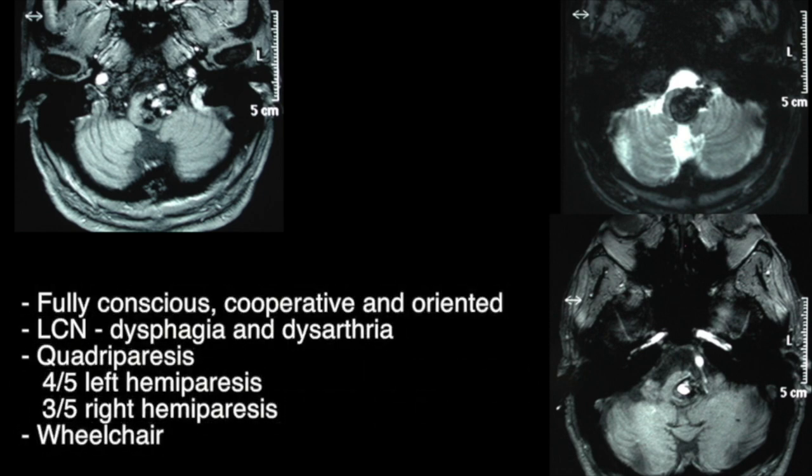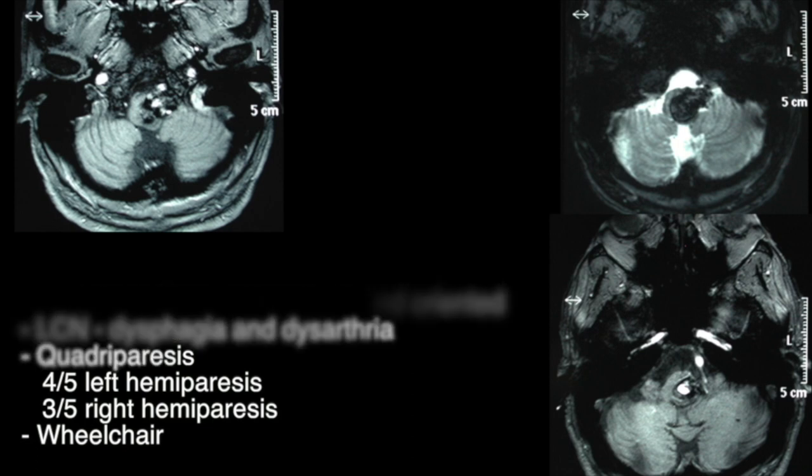On physical examination, the patient was fully conscious, cooperative, and oriented. There was no deficit on cranial nerves except for lower cranial nerves, having dysphagia and dysarthria. She had a mild left hemiparesis of 4 over 5 and a significant right-side hemiparesis of 3 over 5, but was able to use a wheelchair.